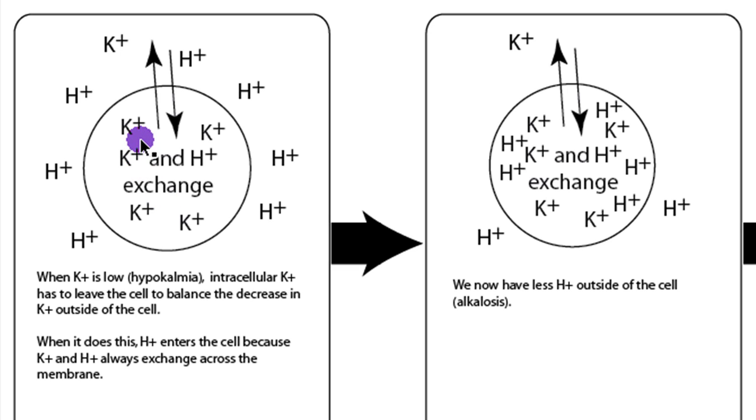The first thing is to recognize that potassium and hydrogen exchange across the cell membrane. It might be a little bit more complex than that. It might be just that hydrogen interacts with the sodium potassium ATPase, which is what puts potassium on the inside of the cell or the outside of the cell. But it's probably easier to think about it as just the exchange. If potassium has to leave, hydrogen has to go in.